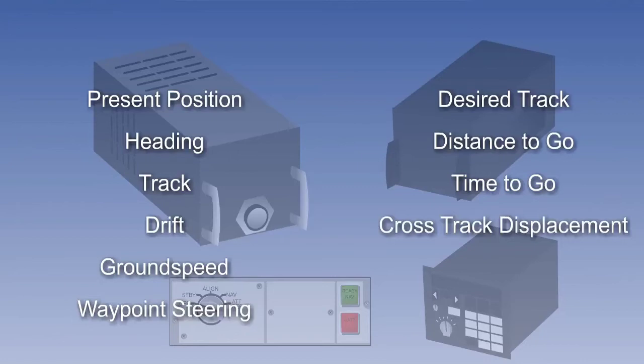And it offers two other facilities, again, both associated with the desired track between two selected waypoints. The first is called cross-track displacement. And the second is track error angle. We'll explain these.